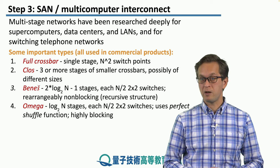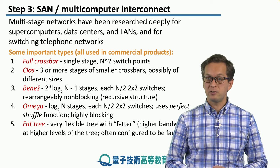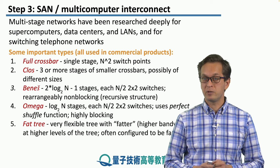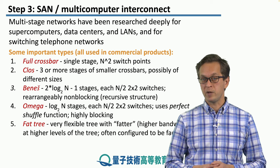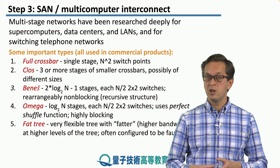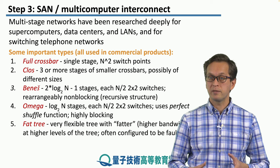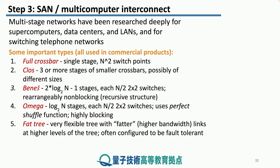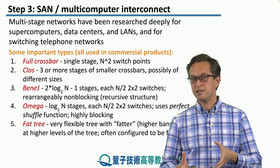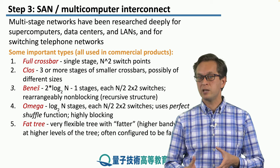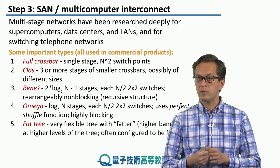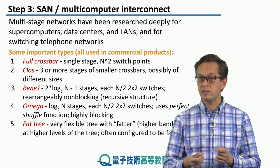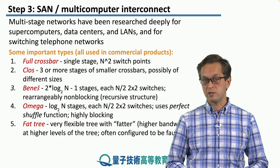We have to be careful about blocking in omega networks. The fat tree is a very flexible tree, where 'fatter' refers to how much bandwidth a particular link has — at higher levels of the tree, fatter, higher-bandwidth connections are used. In reality, it doesn't just mean the link itself is fatter; higher nodes can also connect to different switches, introducing redundancy, robustness, and fault tolerance into the switching network.